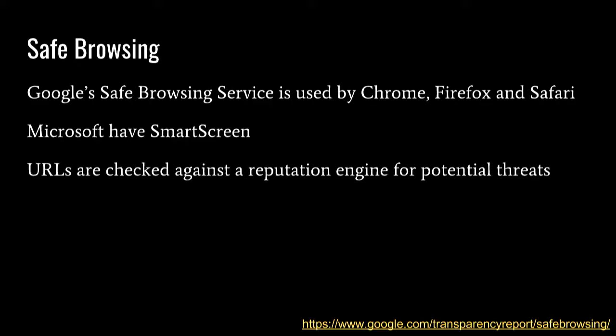Safe browsing: this is a service where your website eventually ends up on it and you go, why can no one browse my website anymore? Google has a safe browsing service where they track known bad websites — websites that have had malicious stuff on them before. Microsoft has something similar called SmartScreen. And every time you visit a page, effectively your browser is checking to make sure it's safe. Both of them are slightly different in how they do it.